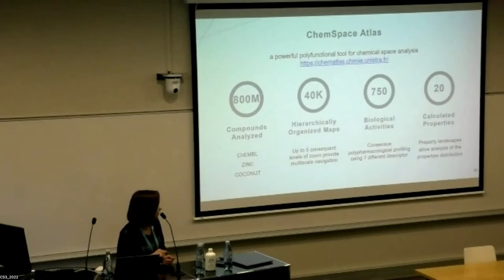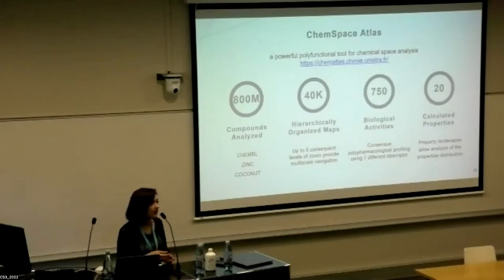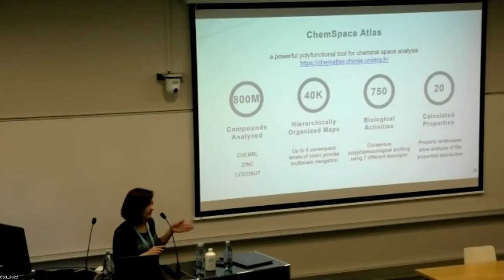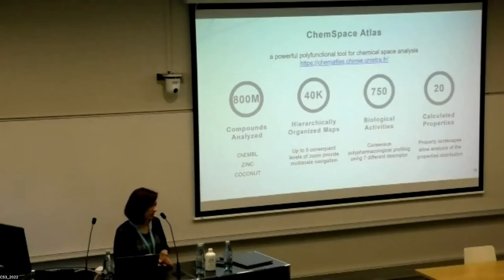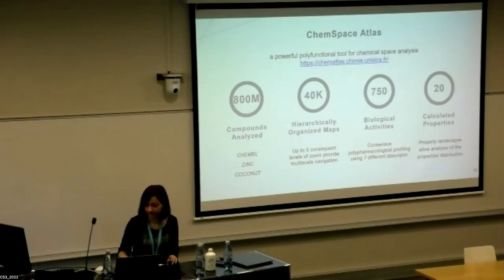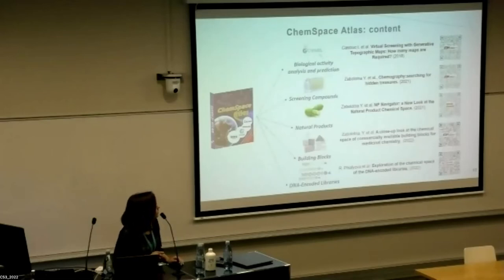ChemSpace Atlas includes large collections — the largest being ZINC virtual, which after filtration and data preparation yielded a dataset of 800 million compounds — compared with ChEMBL and COCONUT for natural product space. We built around 40,000 generative topographic maps on up to five levels of zooming. It also allows biological profiling on 750 biological targets from ChEMBL and demonstrates distribution of 20 different calculated properties like molecular weight and LogP.